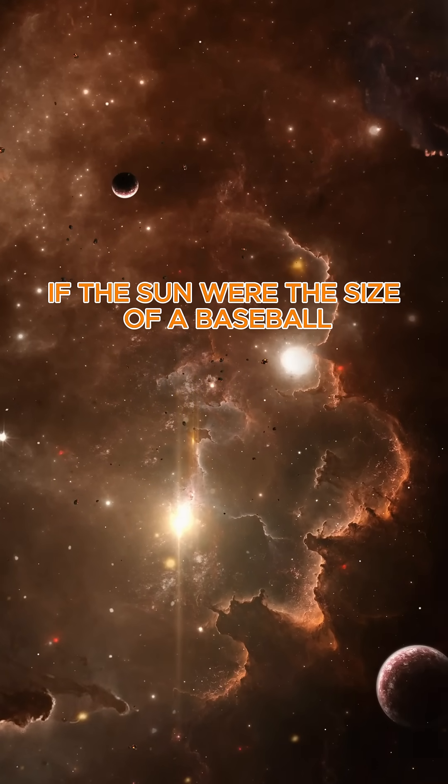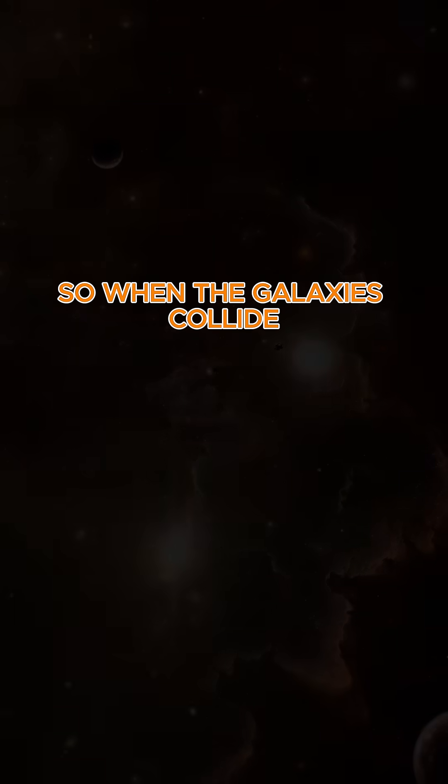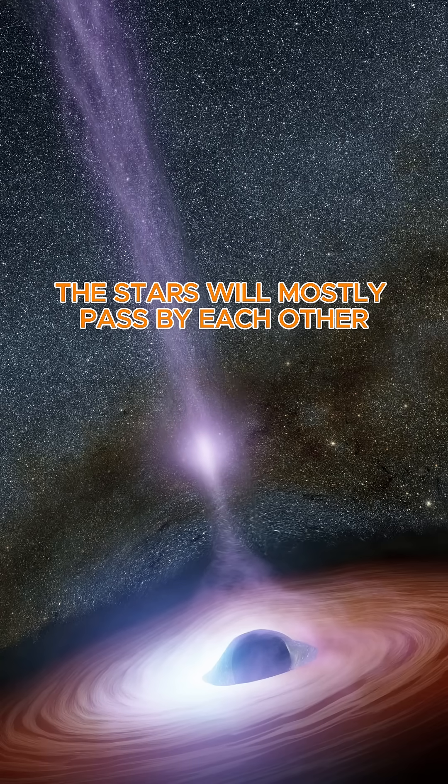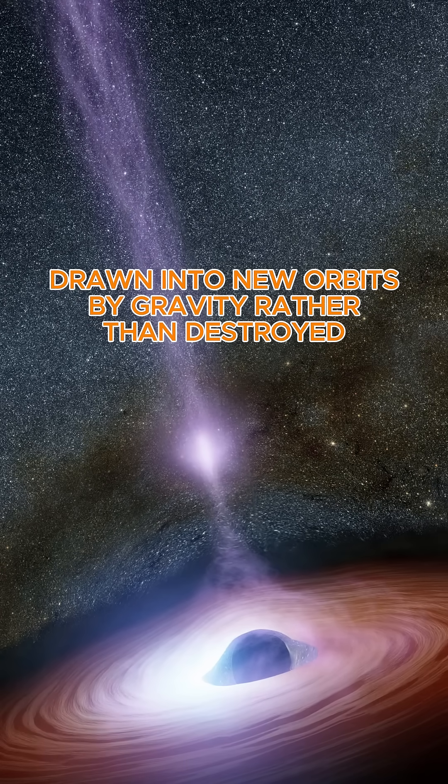If the Sun were the size of a baseball, the nearest star would still be thousands of kilometers away. So when the galaxies collide, the stars will mostly pass by each other, drawn into new orbits by gravity rather than destroyed.